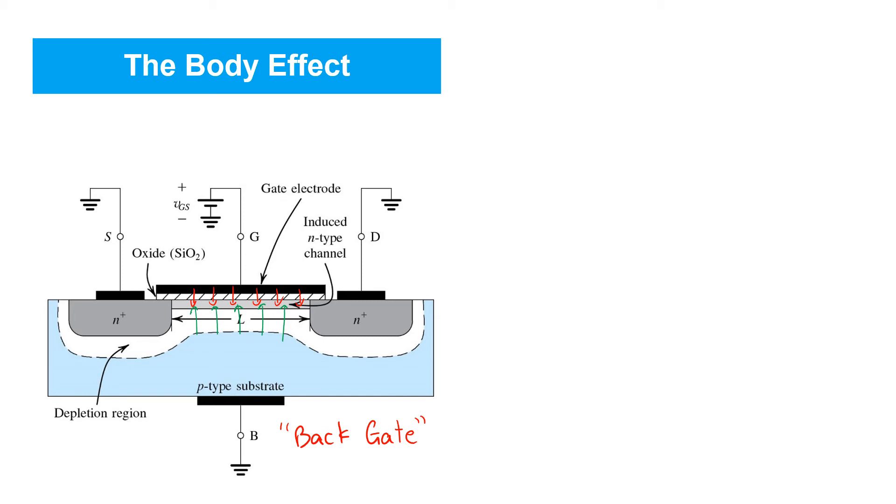But what can happen is that the body voltage can drop below that of the source. So, when we, let's think about what happens when we have an inverted channel and we decrease the gate voltage for an NMOS transistor like this. Well, if we decrease the gate voltage, the channel becomes weaker and its resistivity increases and less drain current flows. So, similarly, if we drop the body voltage, the same thing will happen. The channel will get weaker and there will be less drain current.